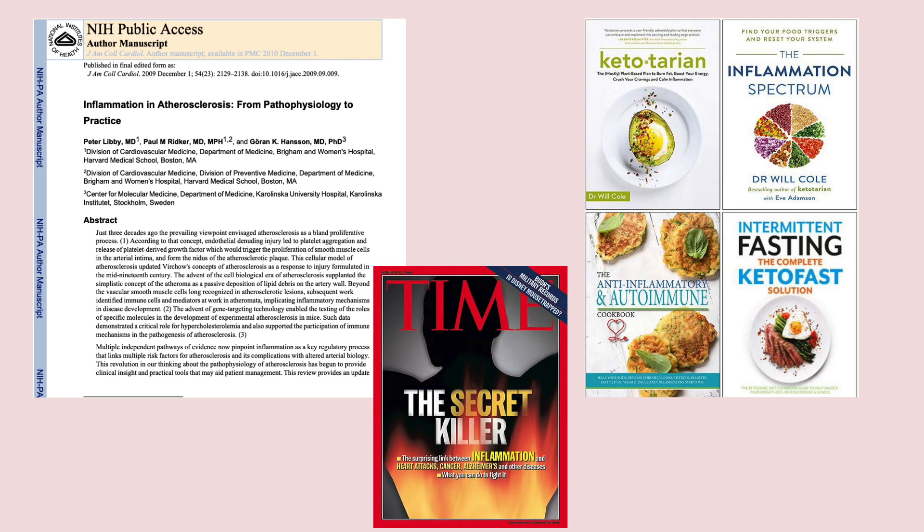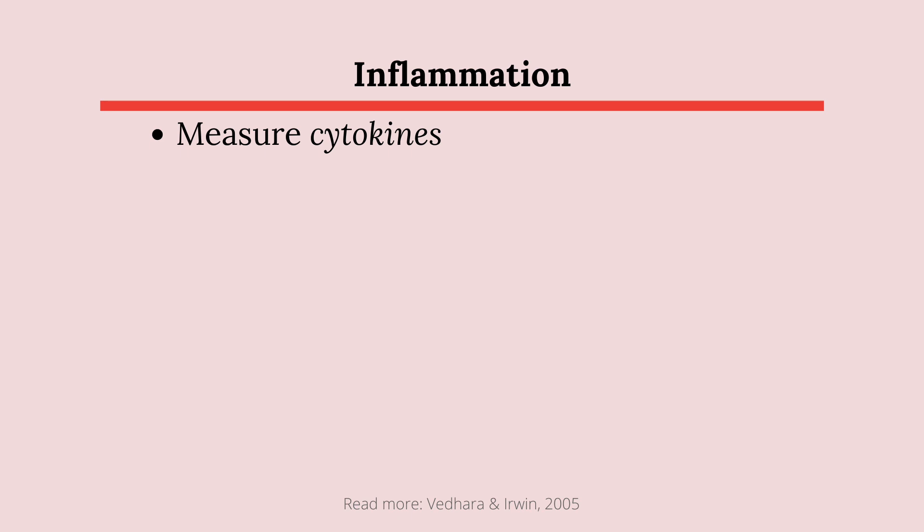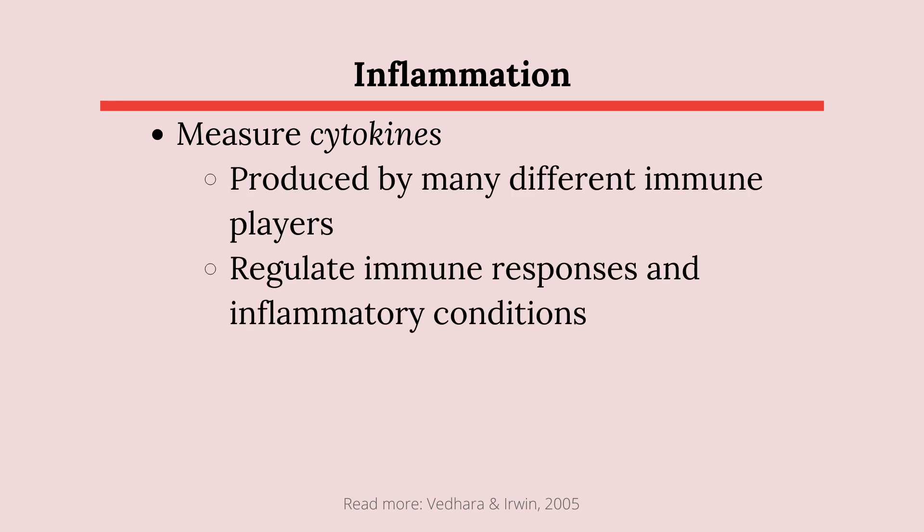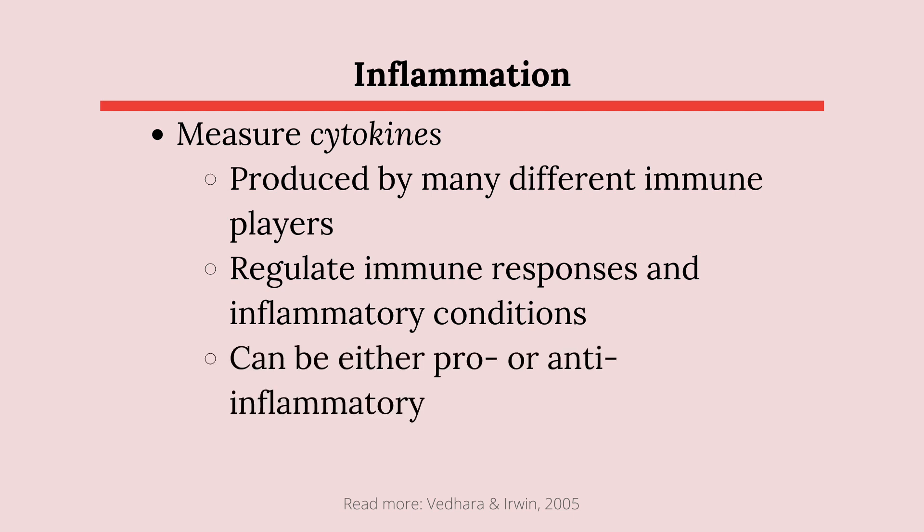You probably hear the word inflammation or anti-inflammatory a fair amount in your daily life now. Not only has it become a hot topic in health psychology, but it's also become sort of a catch-all in the health and wellness world. We measure inflammation by measuring cytokines, which are soluble proteins released by other cells that can regulate immune responses and inflammatory conditions. Cytokines can be either pro- or anti-inflammatory, so what distinguishes the different types of inflammation from others is where those cytokines are measured from.